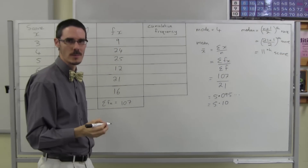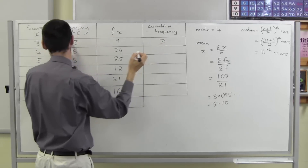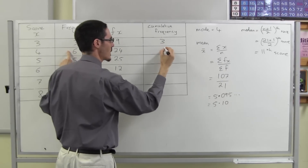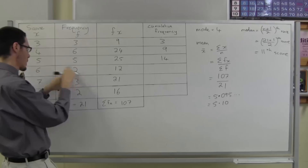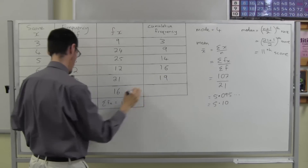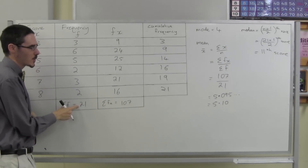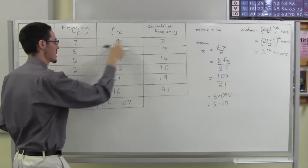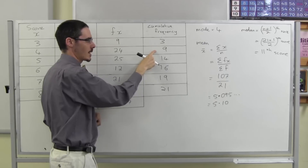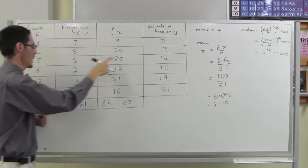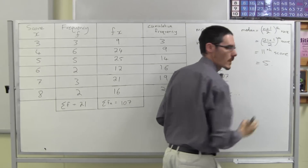I'll use a cumulative frequency column — add up the frequency as I go. 3 so far. Then I've got 6 fours, so I see another 6 scores making 9. Then another 5 fives, getting to 14. Another 2, making 16. Another 3, making 19. And another 2, making 21. Double check this number matches your total. The 11th score? Not here yet, not here yet — the 11th score is on this row, which means it's a 5. The 11th score is 5, and that is the median.